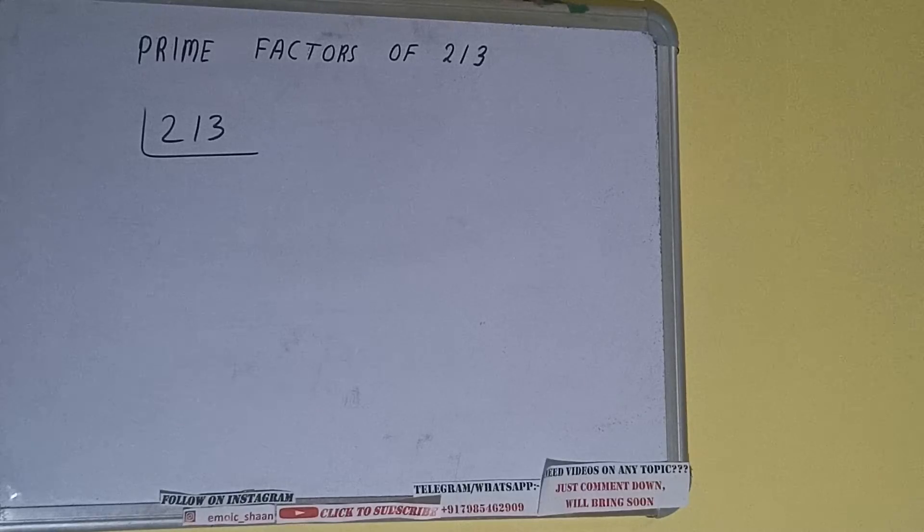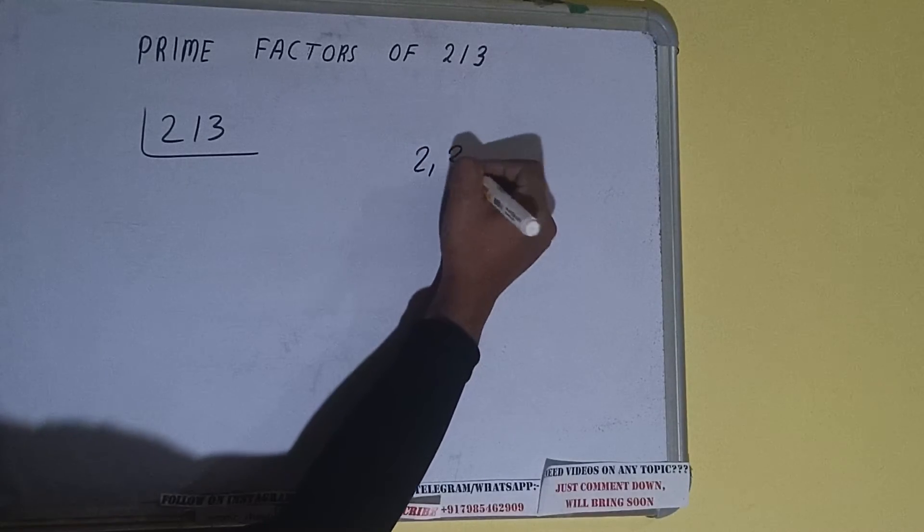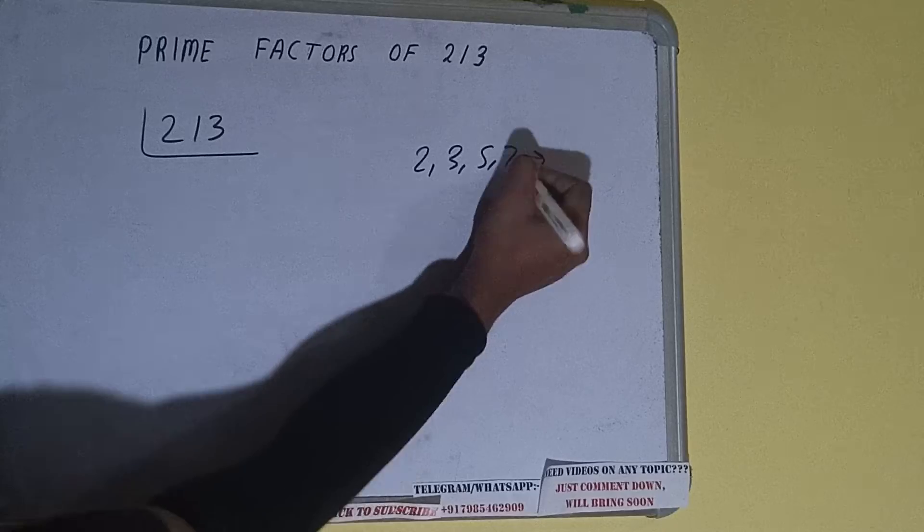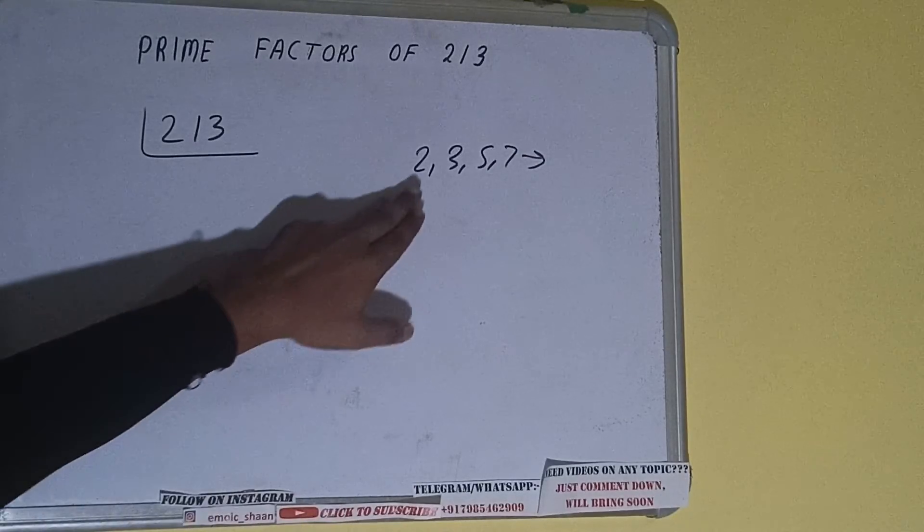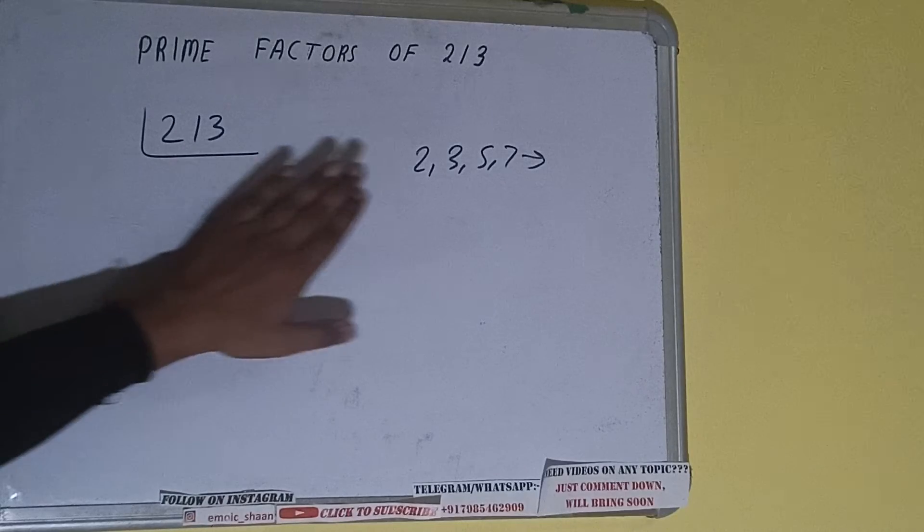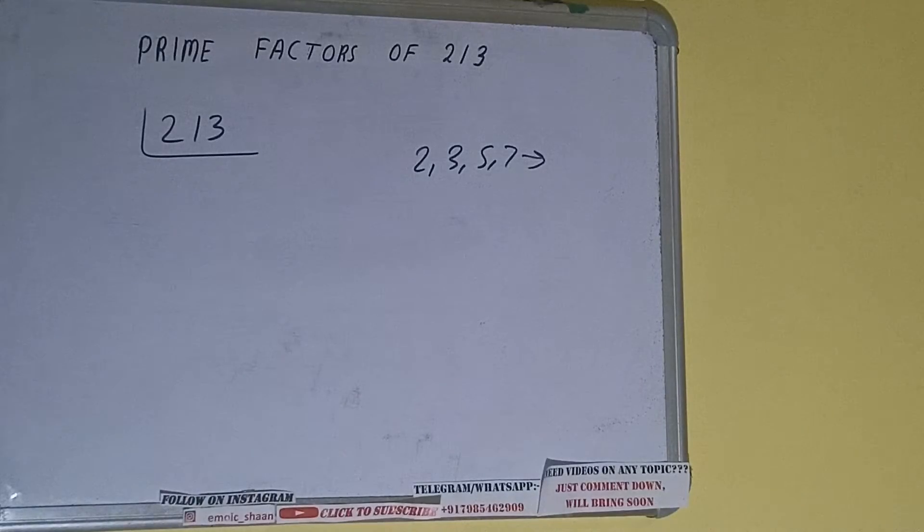All right, so we'll check with the lowest prime number we have, that is 2. Is the number 213 divisible by 2? It is not, because the number is odd. So we'll check with the next lowest prime number, that is 3. Is 213 divisible by 3?